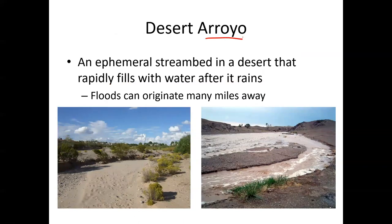Desert arroyos are ephemeral streambeds — intermittent streams that don't exist for long except when it floods. They rapidly fill with water after rain, don't infiltrate very fast, and often look like braided rivers when moving, but only temporarily. The floods that fill these can originate many miles away. If you're standing in an arroyo, be careful — it can fill with water from distant rain, and you need to get to higher ground quickly. Despite an arroyo not being particularly deep, the water moves fast and can wash you away easily.